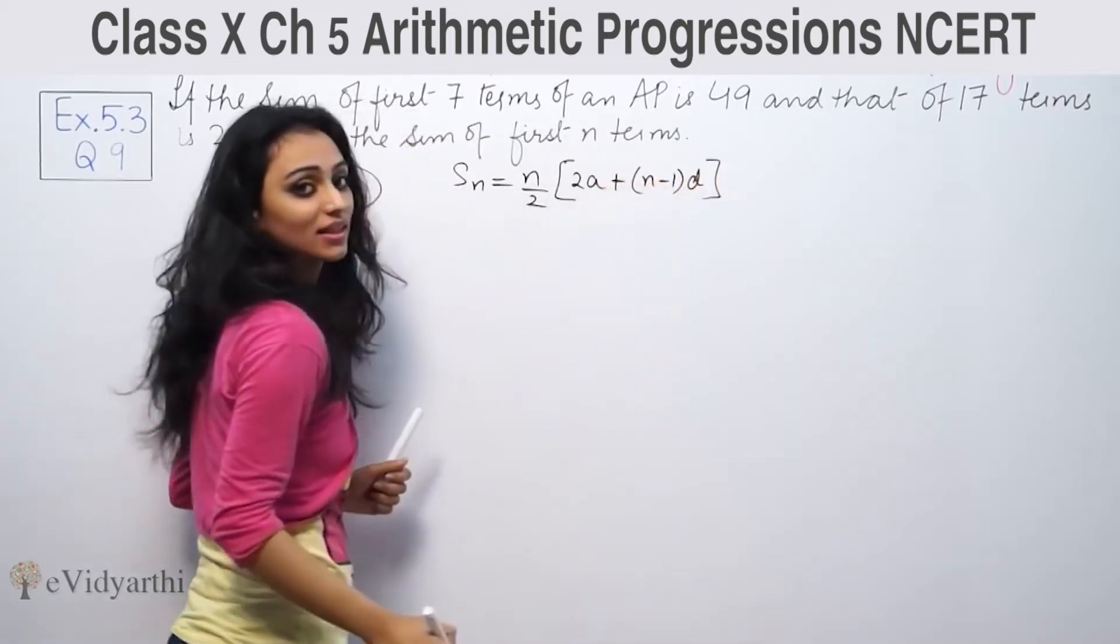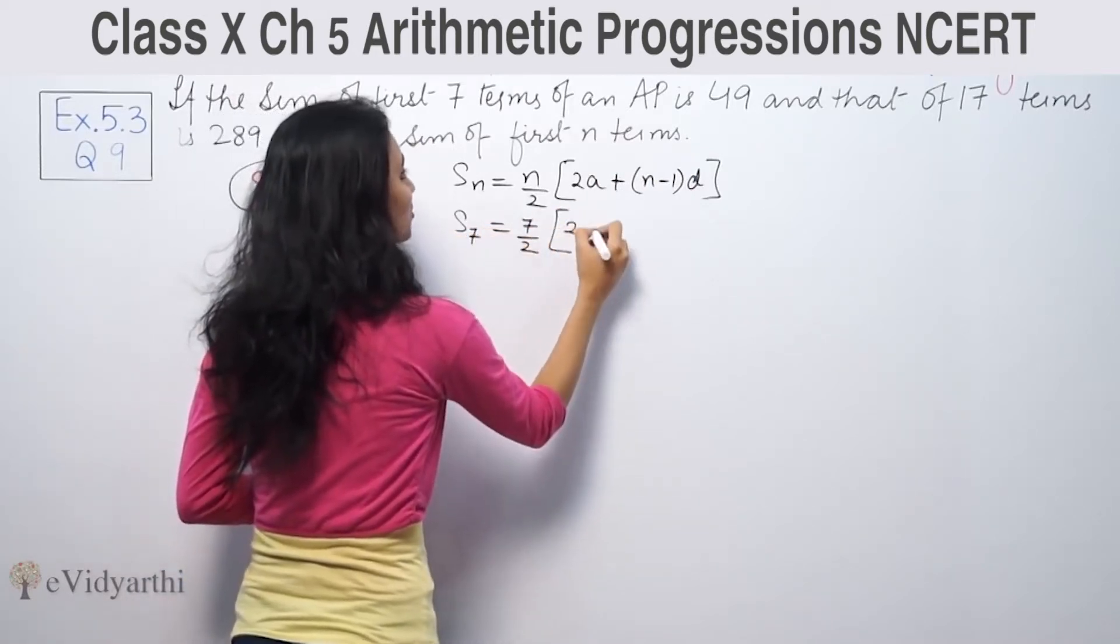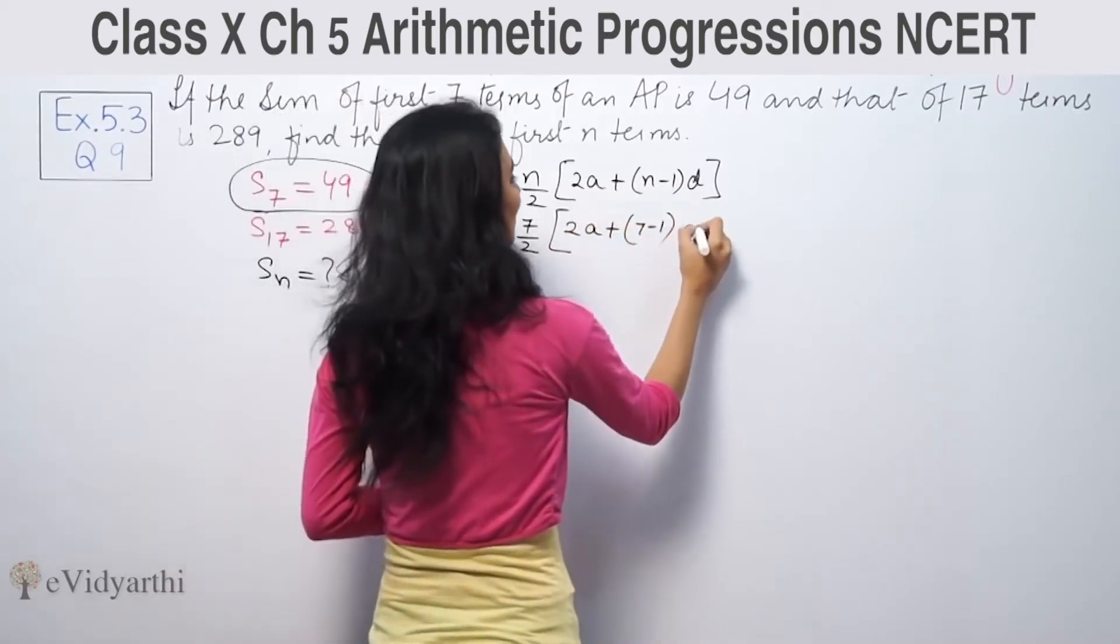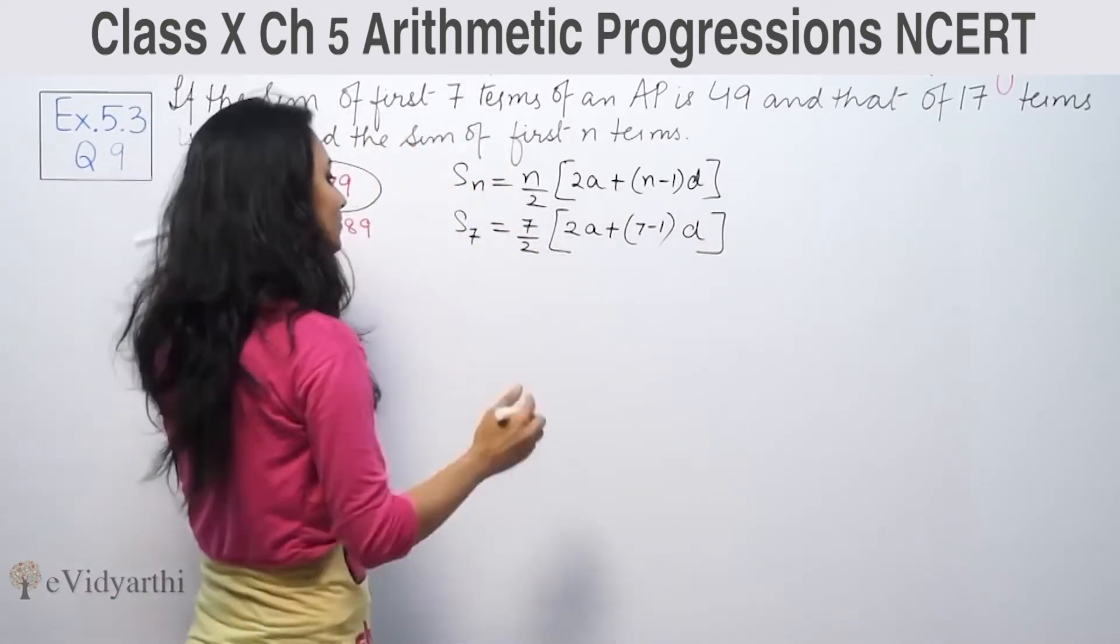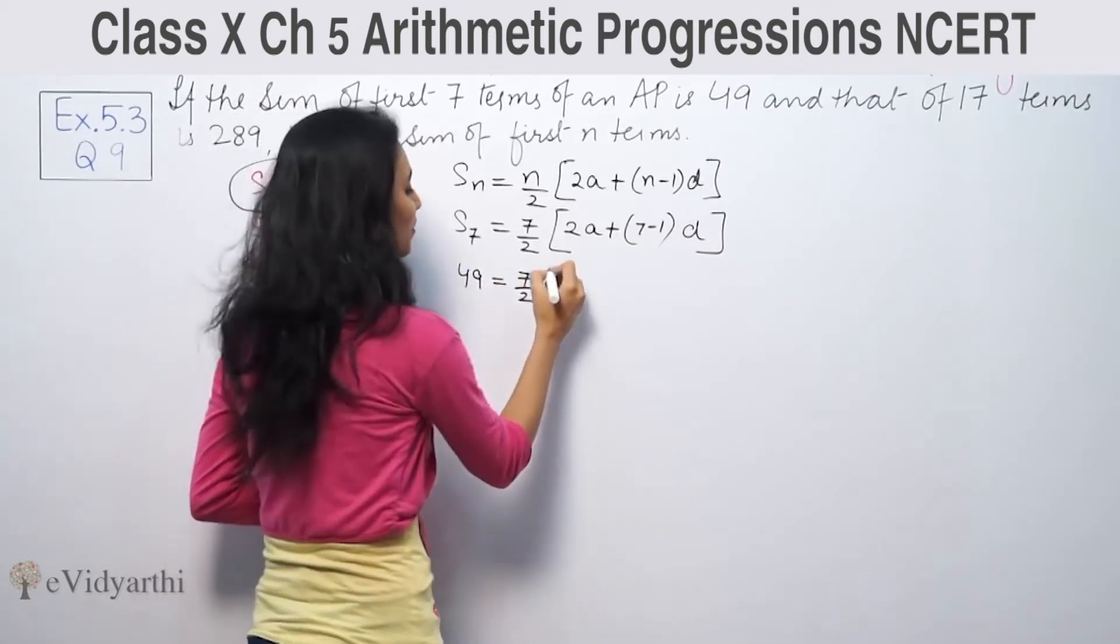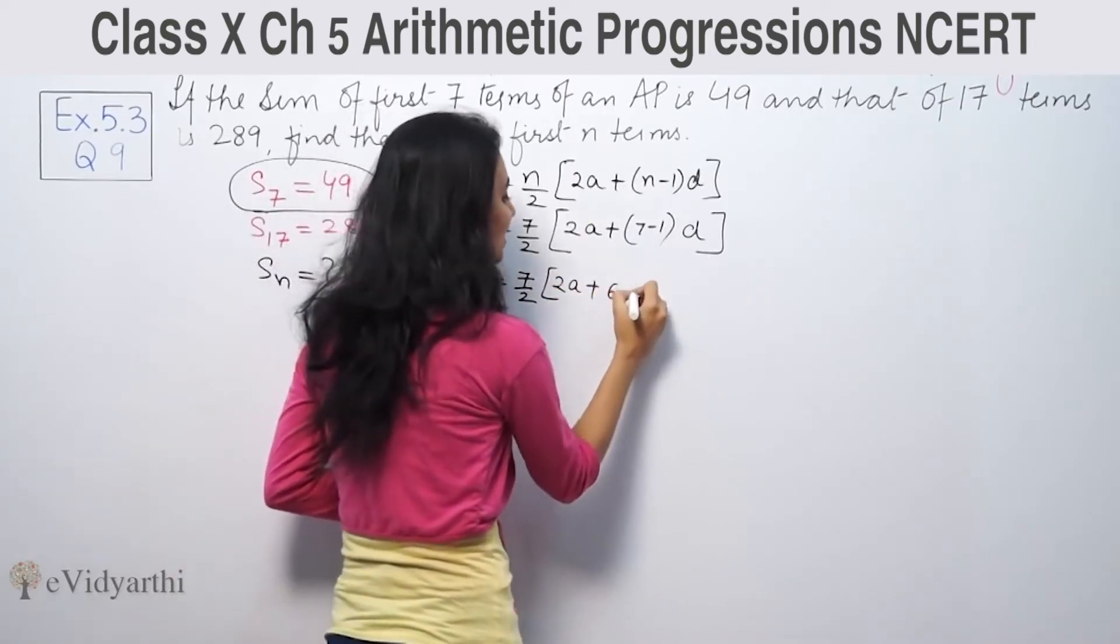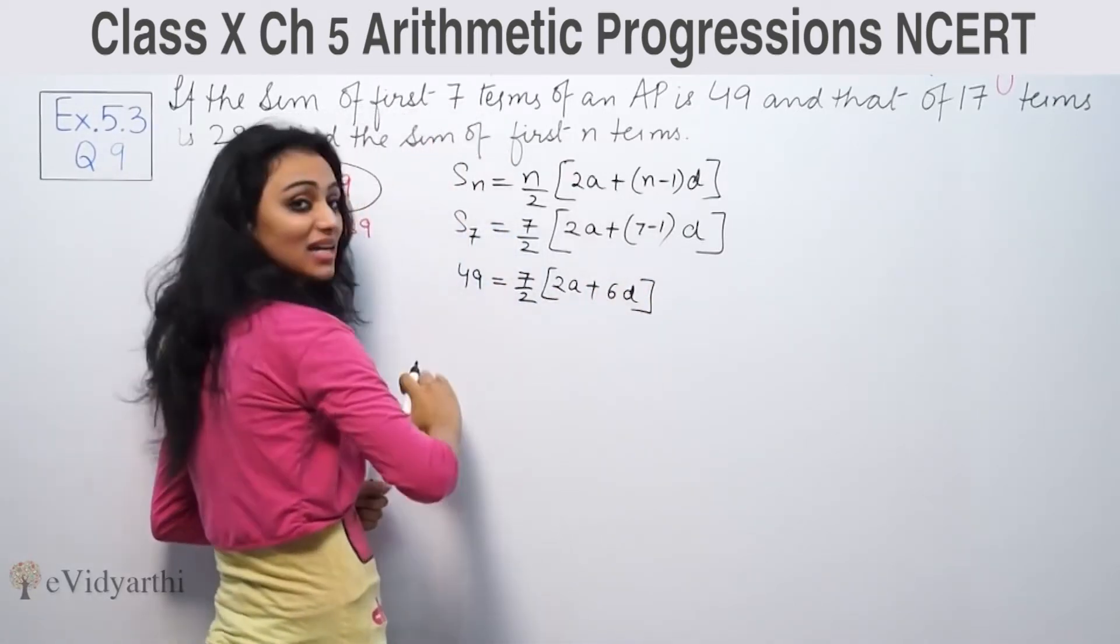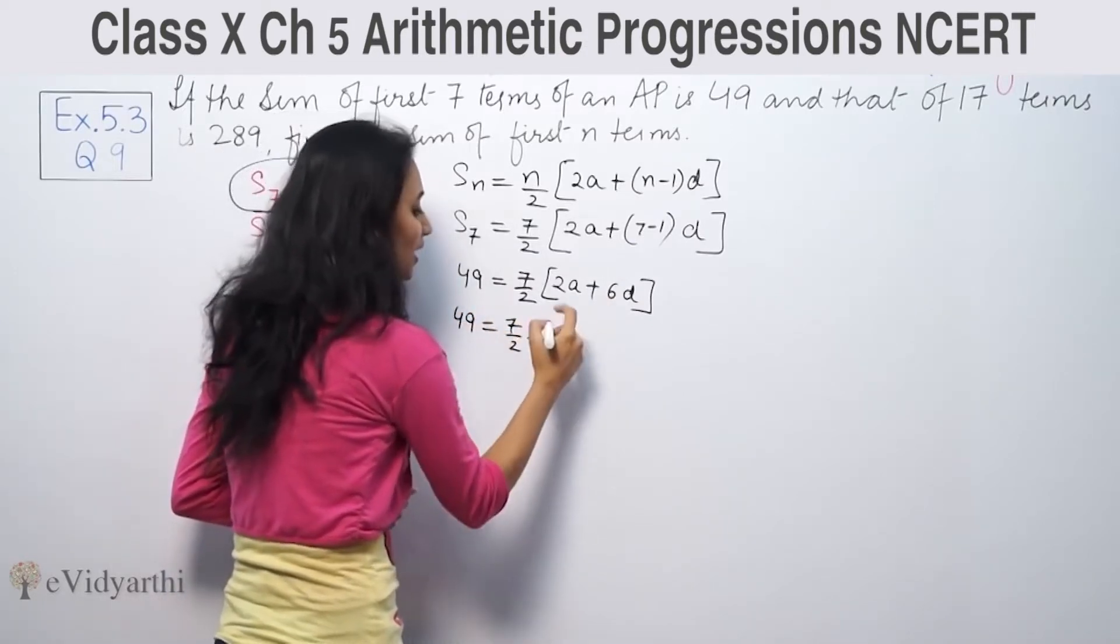So we start with the formula for sum of n terms: Sn = n/2[2a + (n-1)d]. For S7, we have S7 = 7/2[2a + 6d]. This equals 49, so 49 = 7/2 into 2 times [a + 3d].